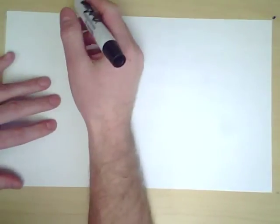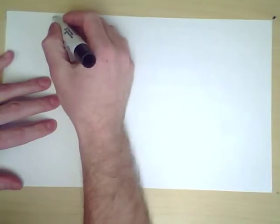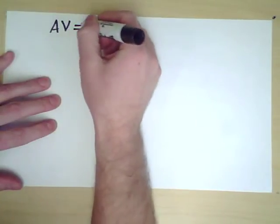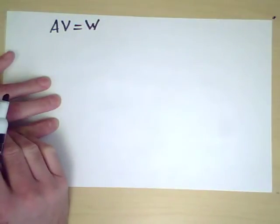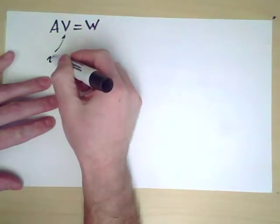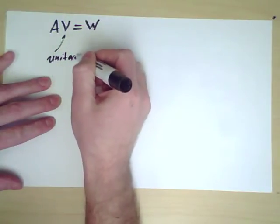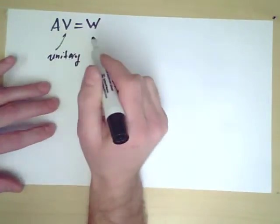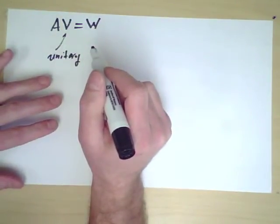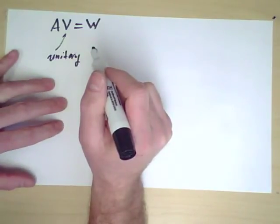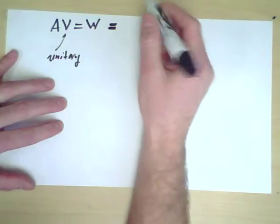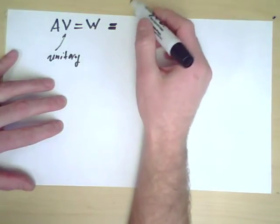Okay, where does that leave us? Well, we have AV equals W overall, where V is unitary. And W, it's not quite unitary, but the columns are all orthogonal, and we know the length of each column.